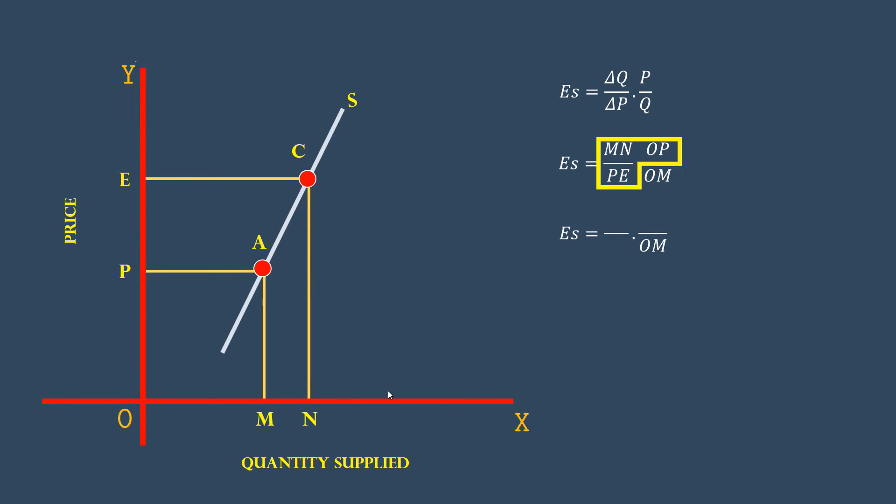We are going to replace these values with the equivalent values. Examine the graph. MN is the same as AB. Instead of MN, let us use AB.